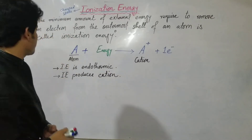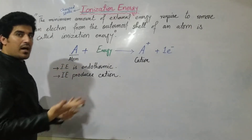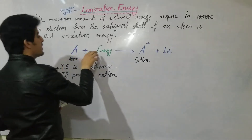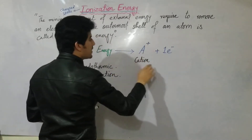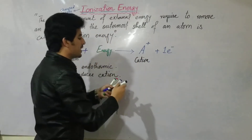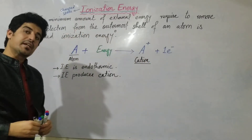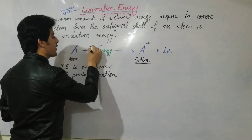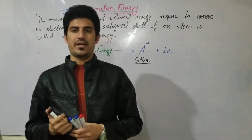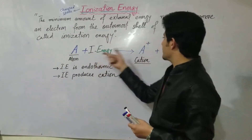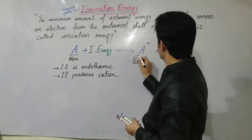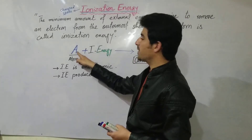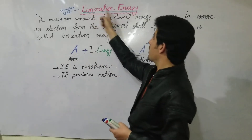Ionization energy is what we call the energy involved in ion formation. When we apply ionization energy to an atom, the atom converts into an ion with a positive charge. The energy required to remove electrons from the surface of an atom is known as ionization energy.